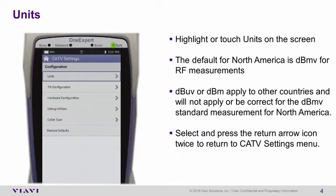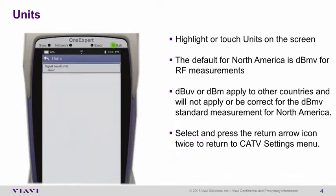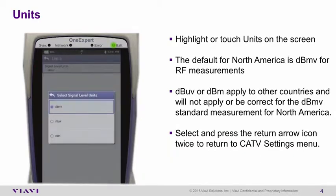Selecting and opening the Units configuration allows the standards to be changed for the RF measurements. The default for North America is dBmV. When selecting the signal level units, the other defaults are dBmicrovolts and dBm for other countries.